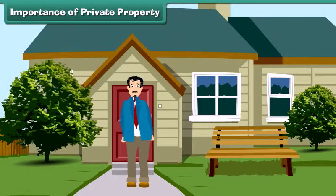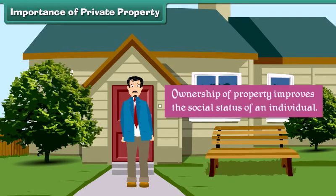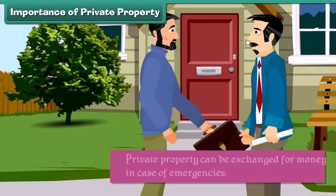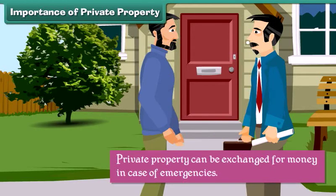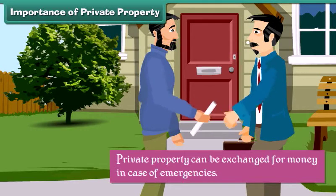Since public property is owned by the government, the government can sell, exchange, or destroy it. Ownership of property improves the social status of an individual. Private property can also be exchanged for money in case of emergencies.